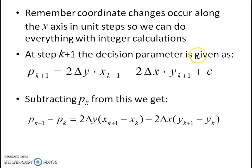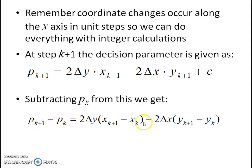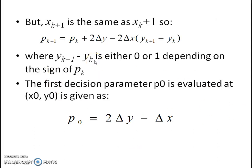At step k+1, the decision parameter pk+1 is derived by subtracting pk from pk+1, giving us the recursive formula. In these formulas, xk+1 minus xk equals 1, and yk+1 minus yk is either 0 or 1. The initial decision parameter p0 can be written as 2Δy minus Δx. The recursive update is: pk+1 = pk + 2Δy minus 2Δx times (yk+1 minus yk). This p0 is used as the first step of the algorithm.